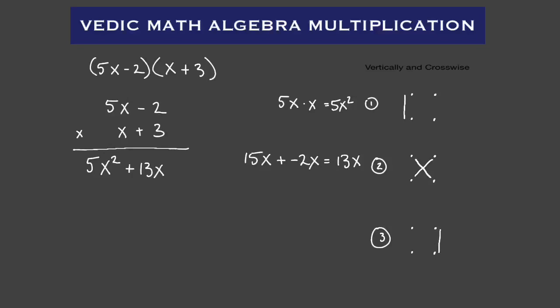And then our last step number three is going to be the multiplication of the last two terms: negative two times three equals negative six. So our last term is negative six. Our answer is five X squared plus 13 X minus six.